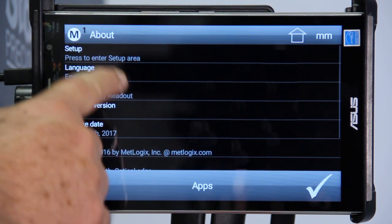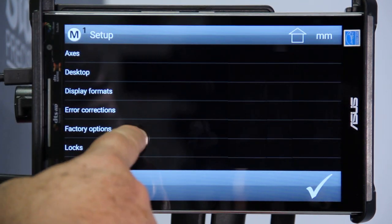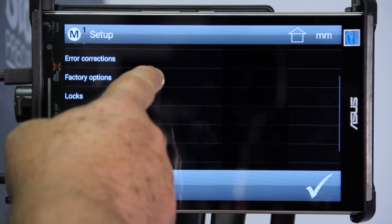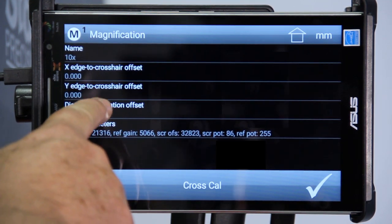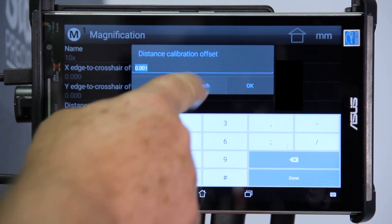For checking your distance calibration, go into optical edge. There's a setup in there for checking your distance calibration. Go into distance calibration offset, then hit teach.